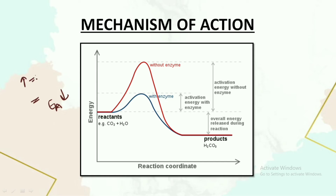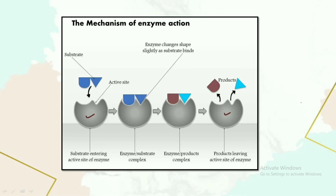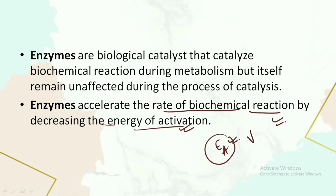This leads to a speeding up — the complete process occurs at a much faster rate in the presence of the enzyme. Activation energy, in simple words, means the energy required to initiate the reaction. Without enzymes, activation energy is more and more time is taken. With the enzyme present, less activation energy is required and the process occurs at a much faster rate. Activation energy is represented as Ea.